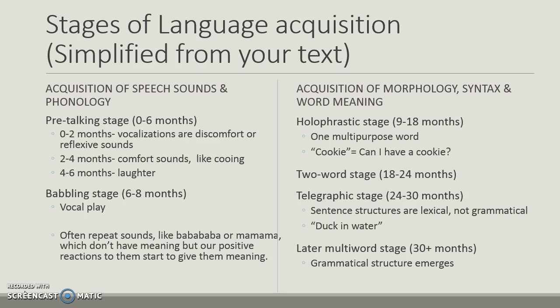Starting around nine months, we acquire morphology, syntax, and word meaning. We start at the holophrasic stage, which is one multipurpose word. For example, 'cookie' means 'can I have a cookie?'